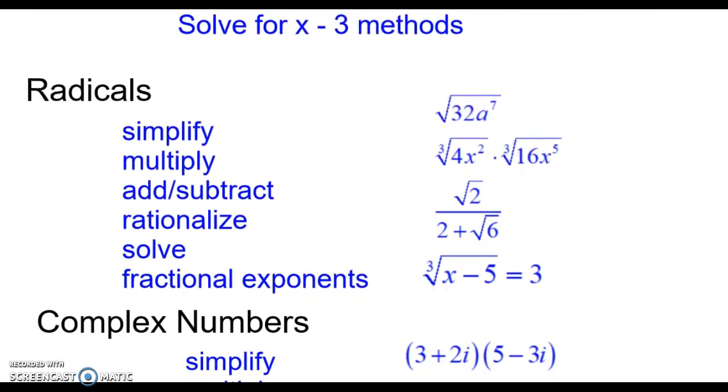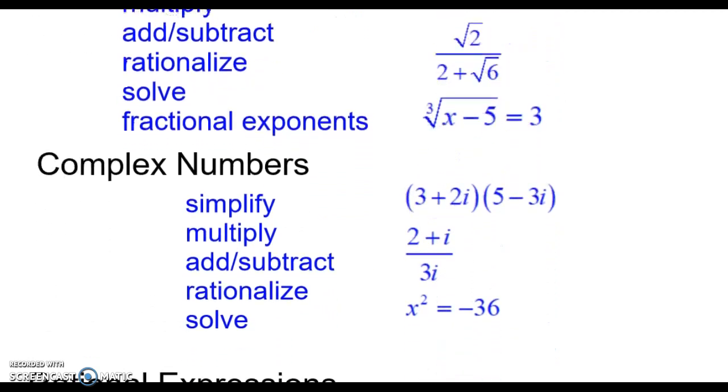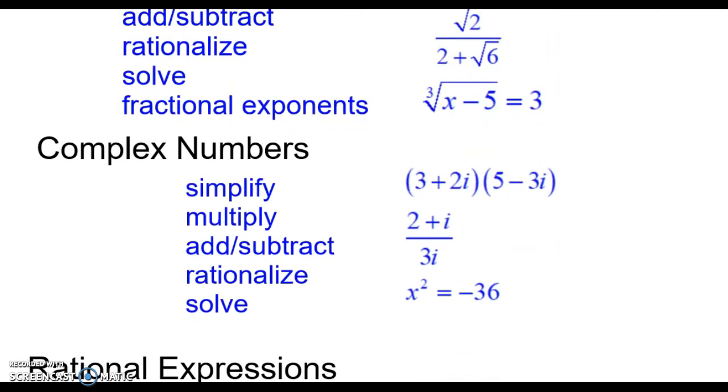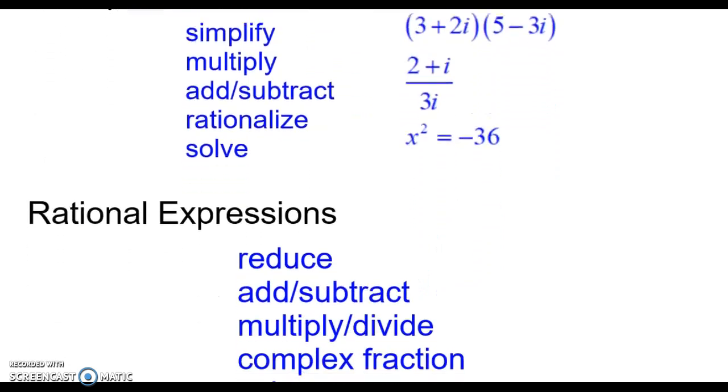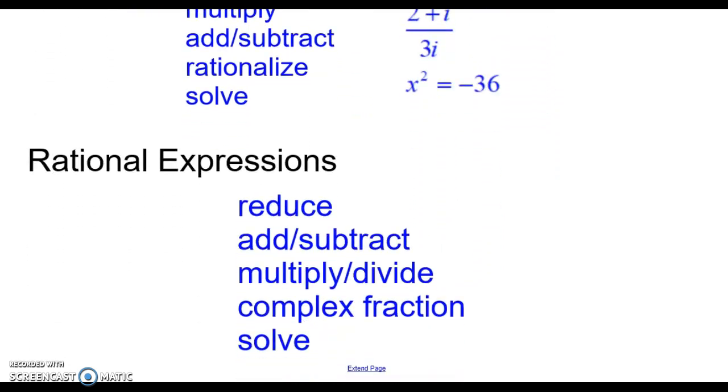Then all of the work with radicals: simplifying them, rationalizing, solving, and complex numbers. When we have a negative underneath the radical that becomes an i, then you should know how to simplify everything with the i. And the last topic we had this year was all of our fractions, our rational expressions.